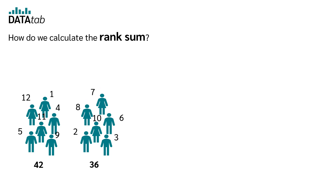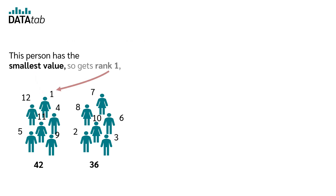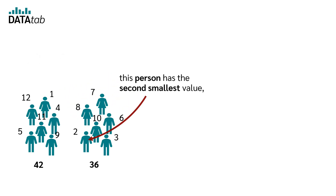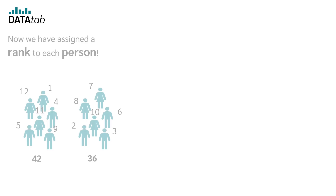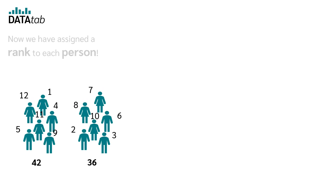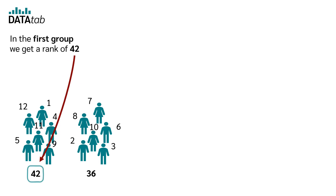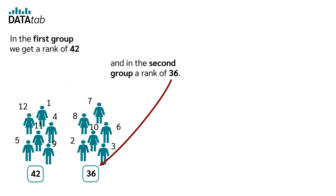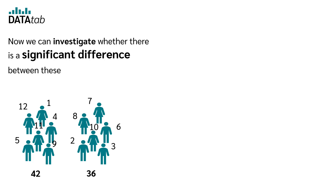How do we calculate the rank sum? We sort all persons from the smallest to the largest value. The person with the smallest value gets rank 1, the second smallest gets rank 2, the third smallest gets rank 3, and so on. Once we've assigned a rank to each person, we simply add up the ranks of the first group and the second group. For example, the first group gets a rank sum of 42 and the second group a rank sum of 36. We can then investigate whether there is a significant difference between these rank sums.